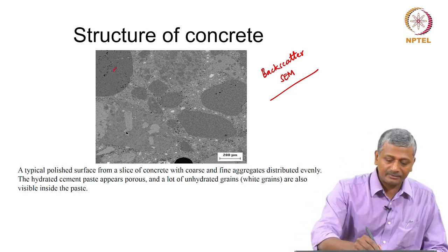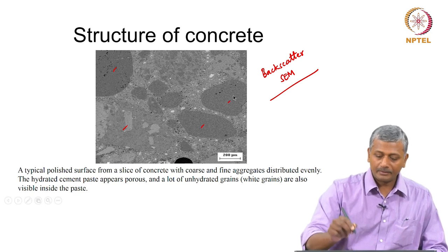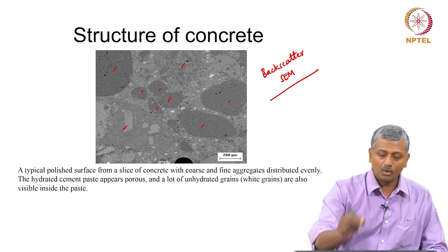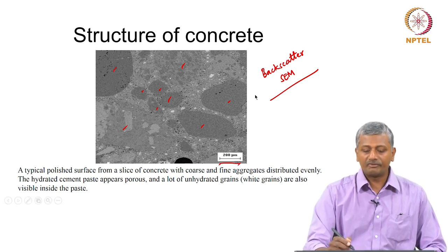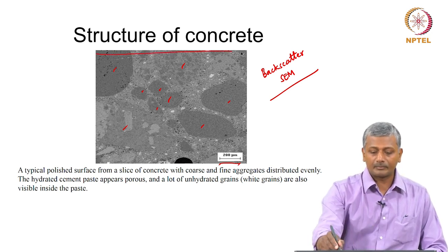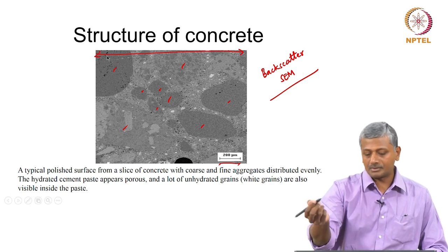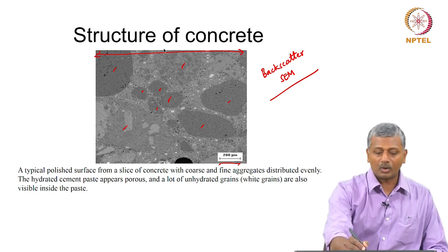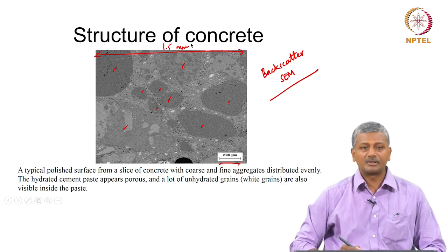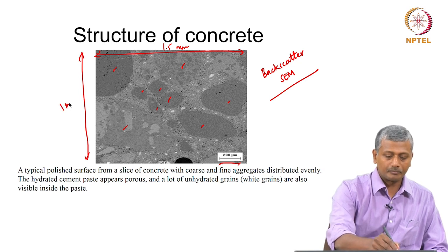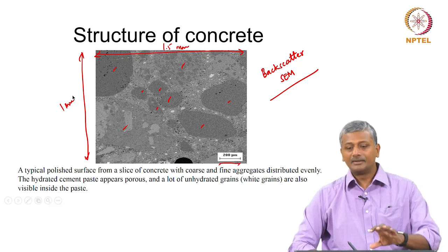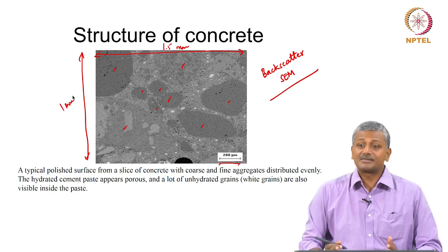You can see the aggregates present here — some are large, some are small. The scale bar shows 200 microns, so the overall field width is about 1.5 millimeters by 1 millimeter. It is quite small — we are looking at a 1.5 by 1 millimeter area.